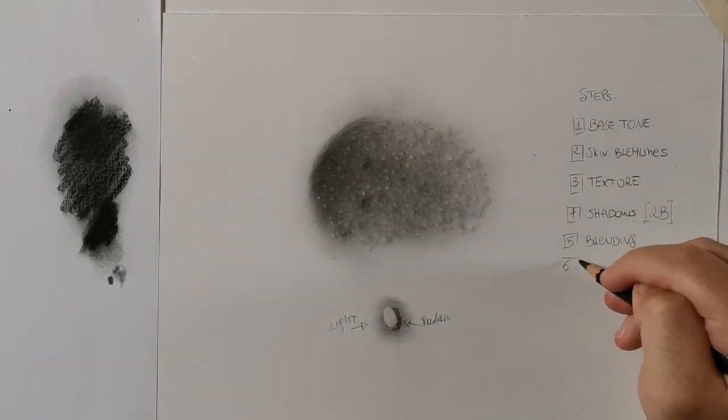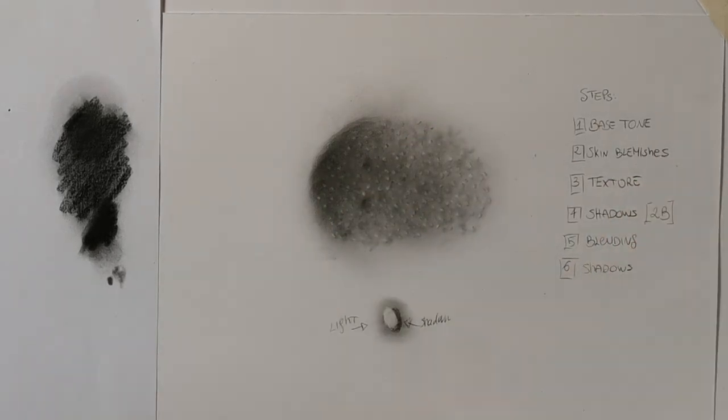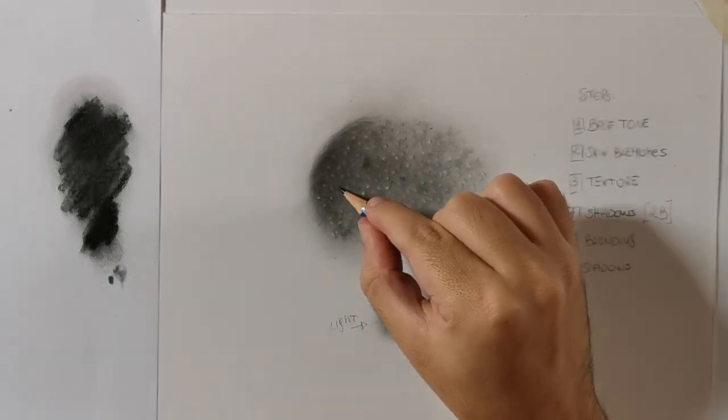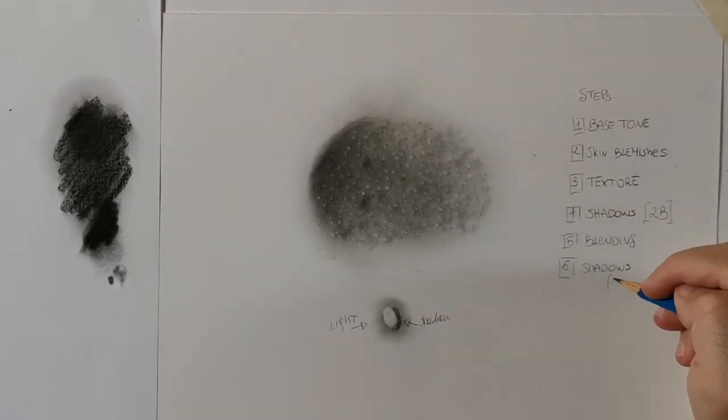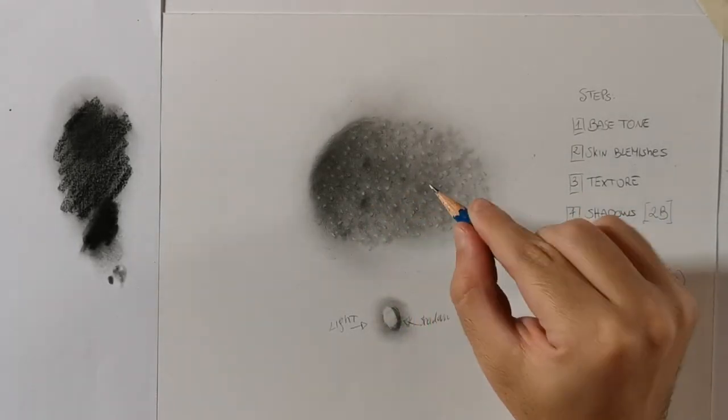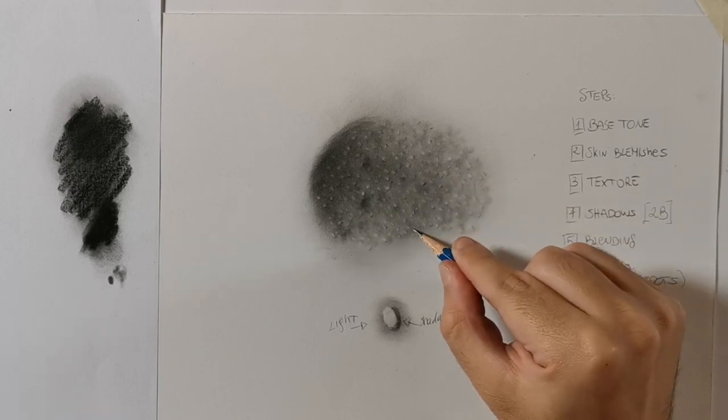Step 6: The shadow. Reinforce the shadow by adding some dark spots. These are the deepest pores. Don't forget that every time you blend you reduce the darker tones. That means you should always reinforce the shadow to avoid a flat work.